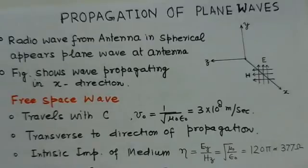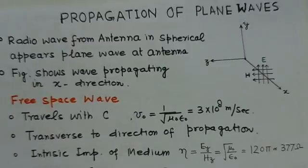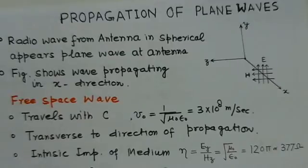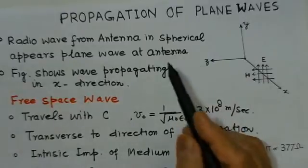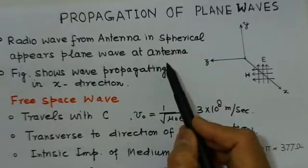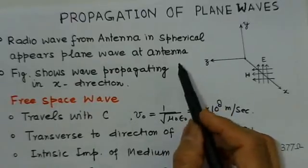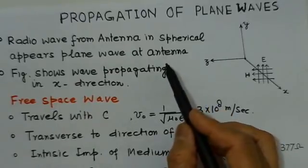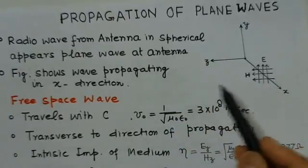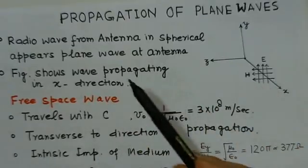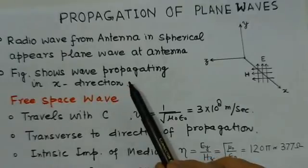When these wavefronts strike an antenna far away, a very small portion of the wavefront strikes the antenna. Since the antenna size is quite small compared to the size of the spherical wave, we can consider that wave at the antenna to be like a plane wave.